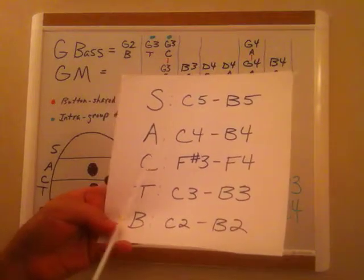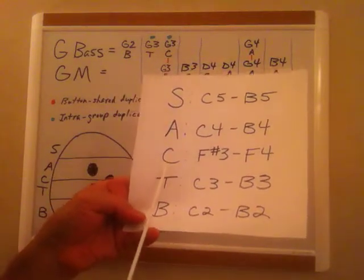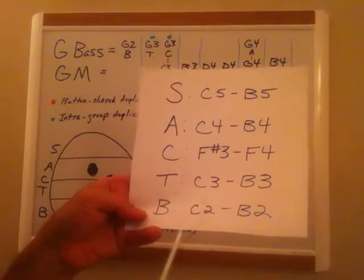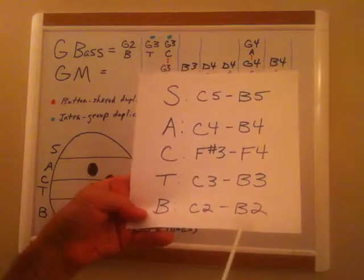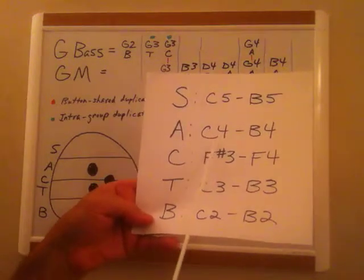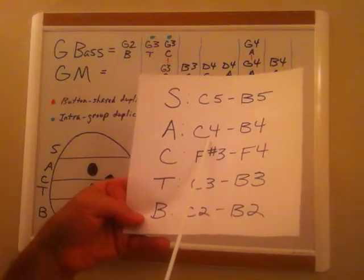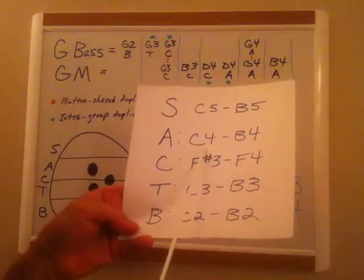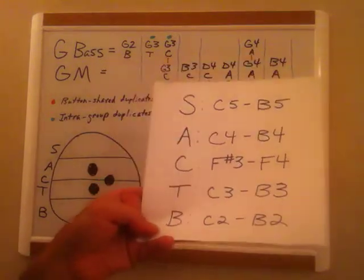Now the Acoustical Society designations would be these. The soprano is C5 to B5, alto C4 to B4, contralto F sharp 3 to F4, tenor C3 to B3, and bass C2 to B2. You might be familiar with C4, that's called middle C. That's the middle C on your accordion and on your keyboard like your Casio or Yamaha. And you might be familiar with that.